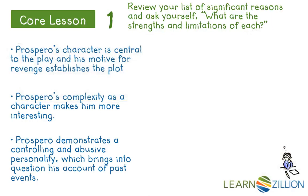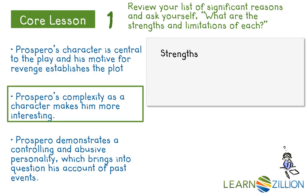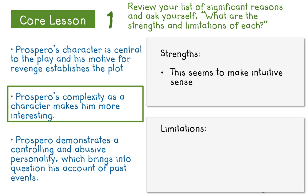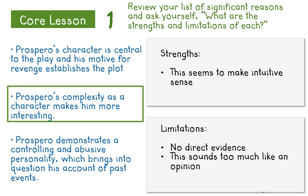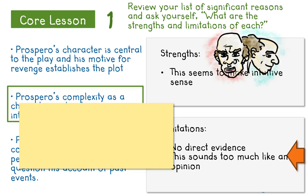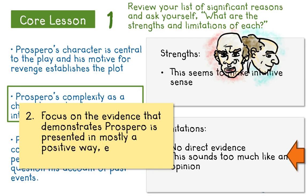Let's look at the next reason. The strength of this reason is that it makes intuitive sense — complexity adds depth and meaning to a play — but that also points to its limitation in that I don't have direct evidence for this statement, and thus it sounds like an opinion. So I'm going to want to focus on the evidence that demonstrates Prospero is presented in mostly a positive way, even though he has negative traits. I have evidence for this, and I can extend that evidence by asking the reader why Shakespeare would want to present this complexity — it makes sense that it makes the play more interesting.